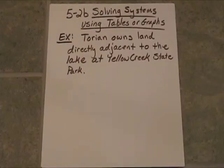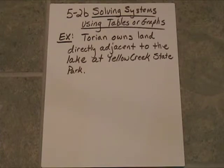So here's an interesting example. Torian owns land directly adjacent to the lake at Yellow Creek State Park. Now, she wants to put in a little beach for her friends to play. She's going to import the sand and it's just going to be really cool. But she doesn't want animals coming into the sand and doing their business. She doesn't want to have to be picking poop out of her beach.